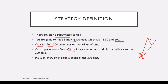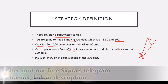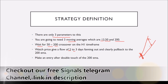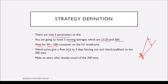After the fanning out, make an entry after a double touch of price to the 200 EMA. The 50 and 200 will fan out, and after two to three days we need to see the price coming back to the 200 EMA and making a double touch. This applies for both an uptrend and a downtrend scenario.